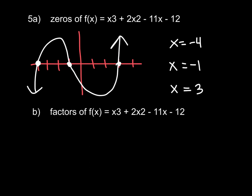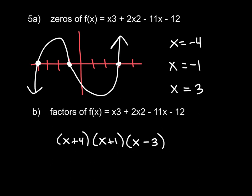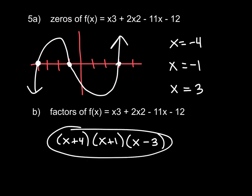Now in part B they want to know what are the factors of this function. The factors are going to have the opposite sign of your zeros. So if x equals negative 4, that means we're going to have a factor of x plus 4. If x equals negative 1, that means we're going to have a factor of x plus 1. And if x equals positive 3, we're going to have a factor of x minus 3. These right here are the factors of our function. If you were to double distribute, combine your like terms, and then distribute to the x minus 3 and combine like terms again, you would wind up with this function. So these are our factors and these are our zeros.